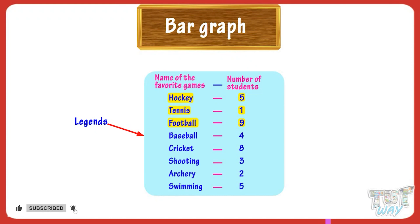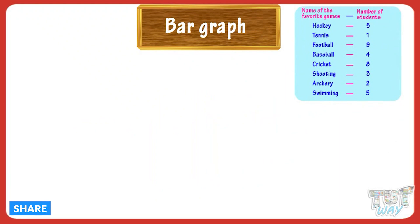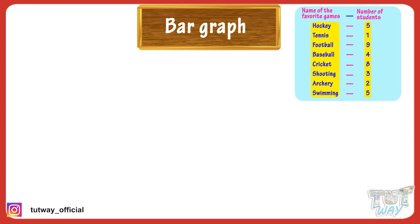Now let's see how this data can be represented in the form of a bar graph. We have two types of information: numeric values giving the number of students, and textual values giving the names of their favorite games.